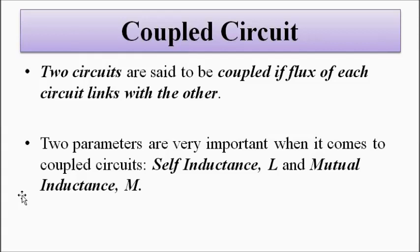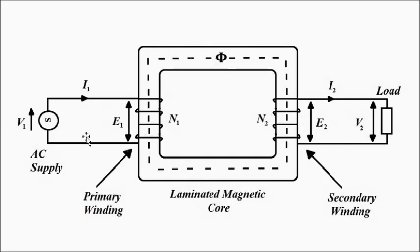Now, two circuits are said to be coupled if the flux of each circuit links with the other. This coupled circuit concept becomes very important for our discussion on transformers. In transformers we have a laminated magnetic core, a primary winding and a secondary winding — both essentially consisting of inductance. When we connect an AC supply, current flows through the primary coil, produces a flux, and as a result EMF E2 is induced in the secondary because of this mutual flux.